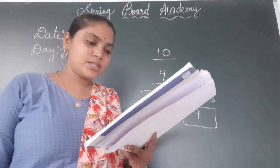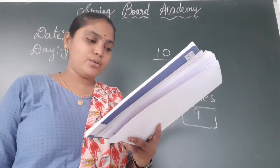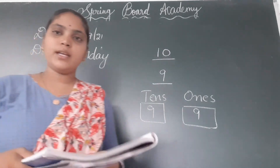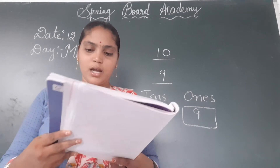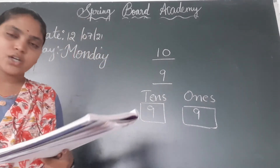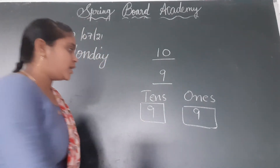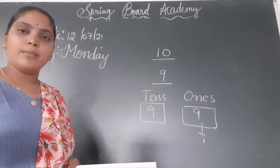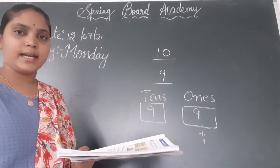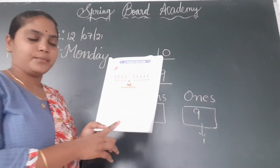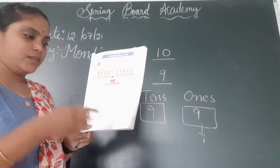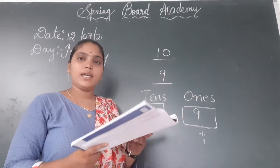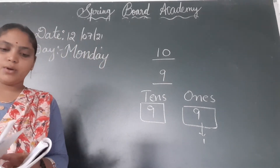How many more balls does Raman need to make another packet of 10 balls? Here 9 balls are there, so if we add only one ball, Raman can make another packet of 10 balls. So here you have to write 1. If Raman adds just one ball, he can make another packet of 10 balls.